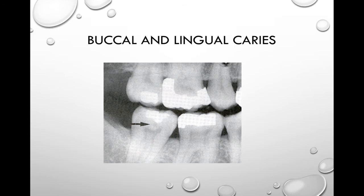We can also determine if a patient has buccal or lingual caries, but it's better to detect them with a clinical exam. They appear as a small, round radiolucent area with well-defined margins, but a lesion must be more advanced to appear clearly on a radiograph. There's no way to tell if a lesion is buccal or lingual on a radiograph because radiographs are two-dimensional images of a three-dimensional object. Sometimes you can make a guess based on the patient's anatomy — for example, a radiolucency on tooth number 31 in the area of the buccal grooves of a mandibular molar can likely be assumed buccal, but clinical assessment is needed to confirm.